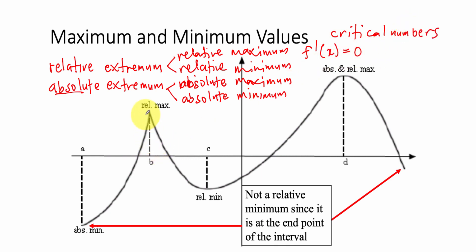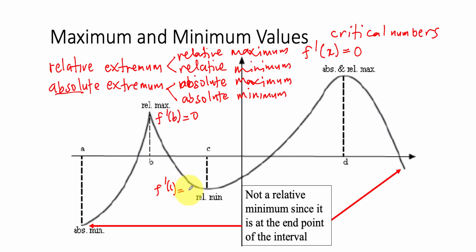For example, in here, f'(b) is equal to 0, so this one is a Maximum. This one is a Minimum point at the bottom — Relative Minimum. So here, f'(c) is equal to 0. And this one, f'(b) is equal to 0.